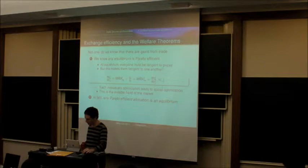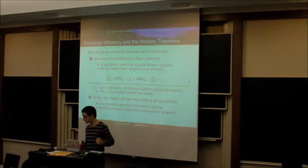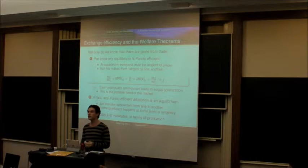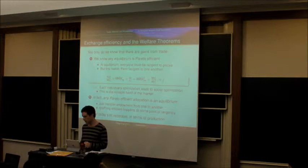And to get any other equilibrium from one equilibrium all we need to do is transfer income between different people. Anything that's efficient happens at some point of tangency and in a lot of ways what we're going to do today is just going to reiterate and reinforce the way in which production follows the same basic ideas. It's going to make everything tangent to everything else it should be tangent to and therefore we're going to get efficiency.